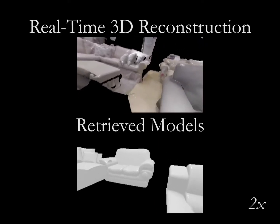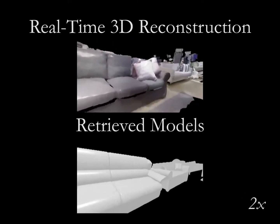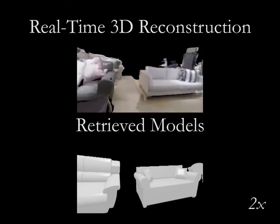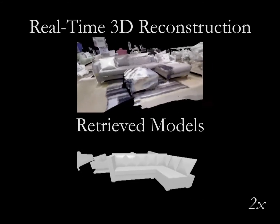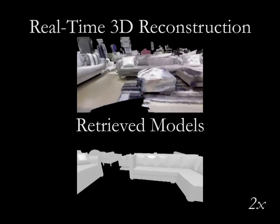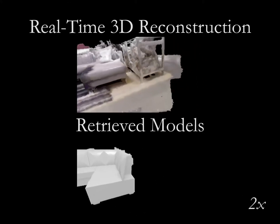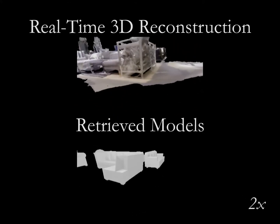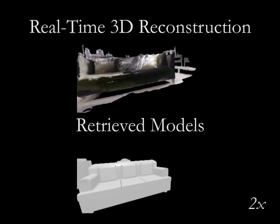To test the capability of our system, we scan large scenes in IKEA where various different furniture appear in the same scenes. Our system is able to find similar shapes for reconstructing the various couches, even as they are obscured by pillows.